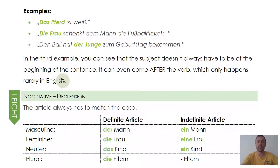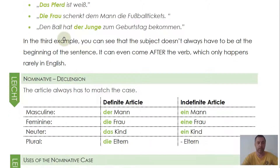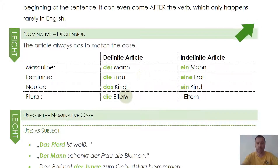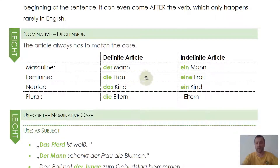I also have an entire video on where the subject is, which I will link in the info cards. There is also declension. The base form is usually what you learn first, and that's the nominative version of all the articles. The base form with the definite article is 'der, die, das,' and in plural we have 'die.' I'll link my playlist for all the articles in the info cards.